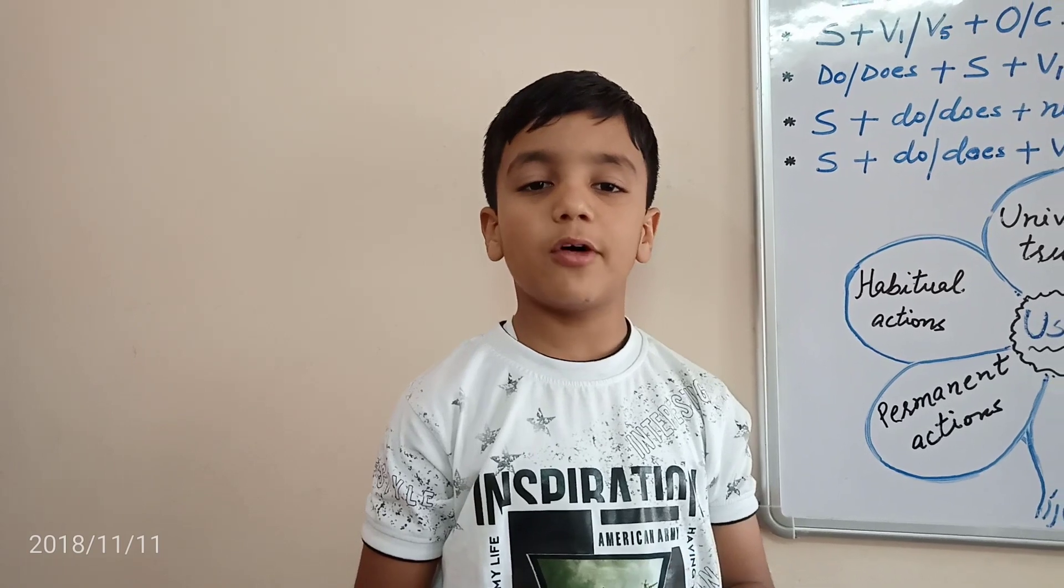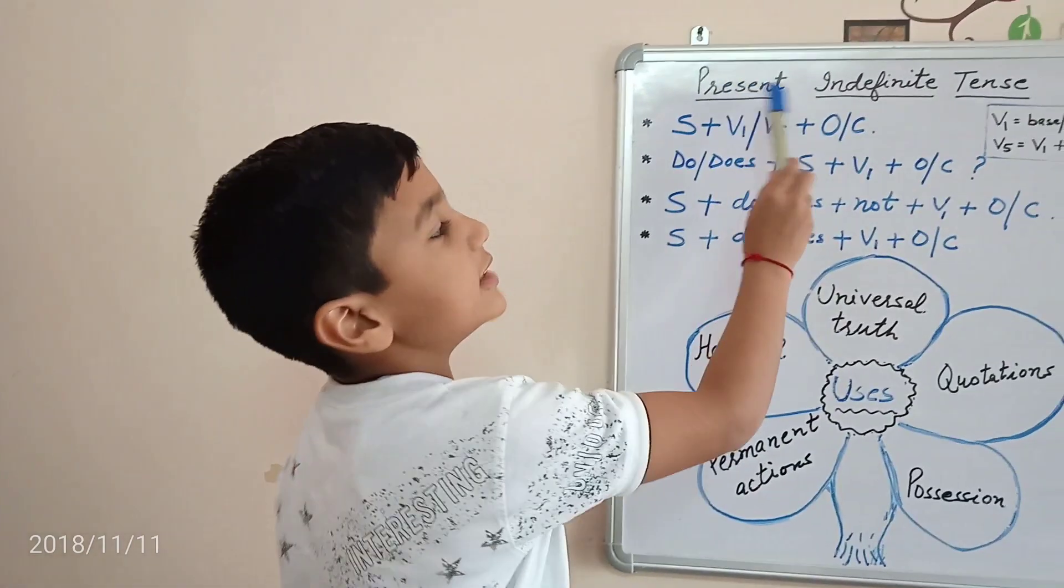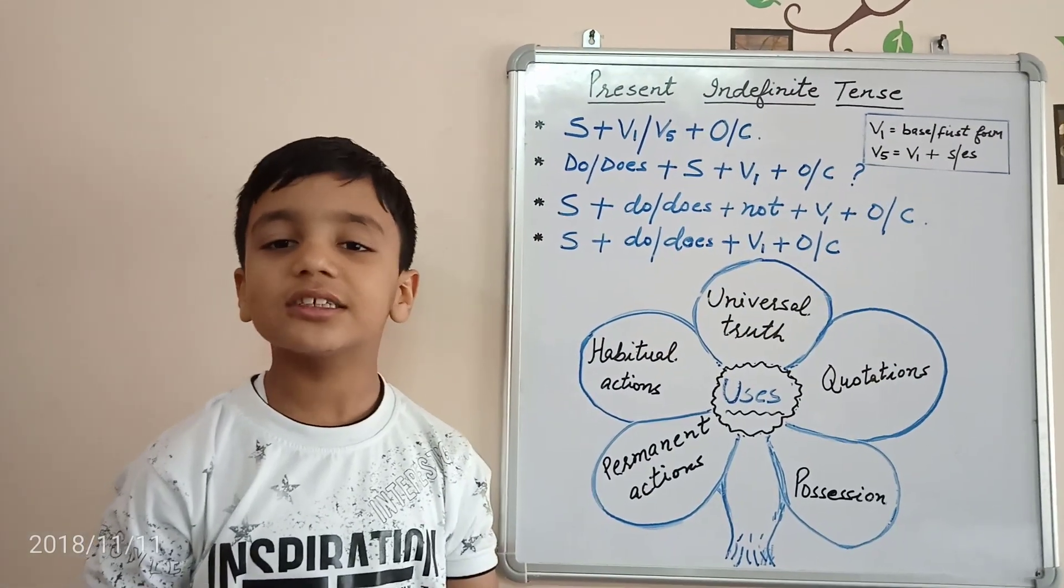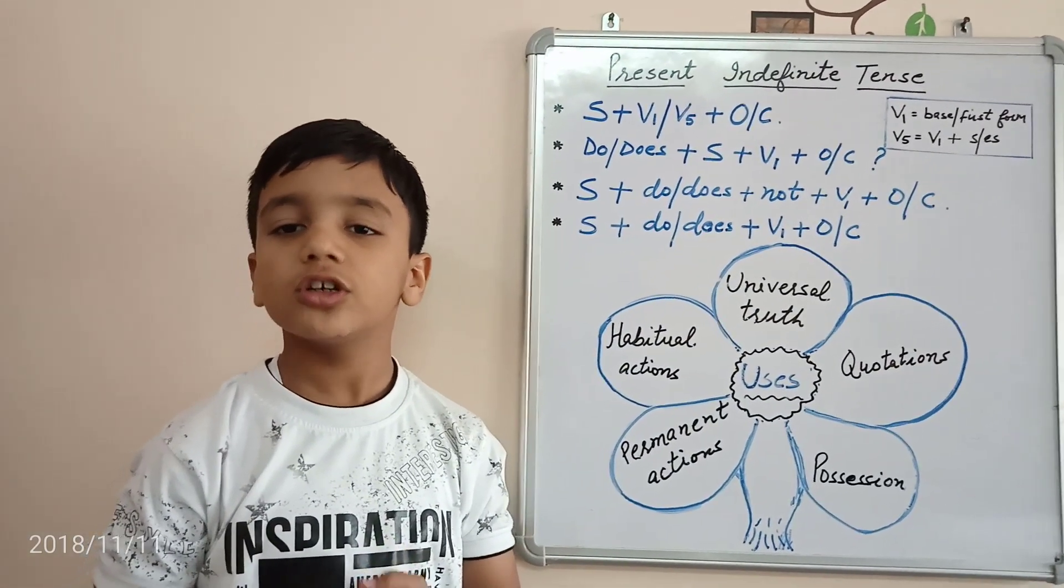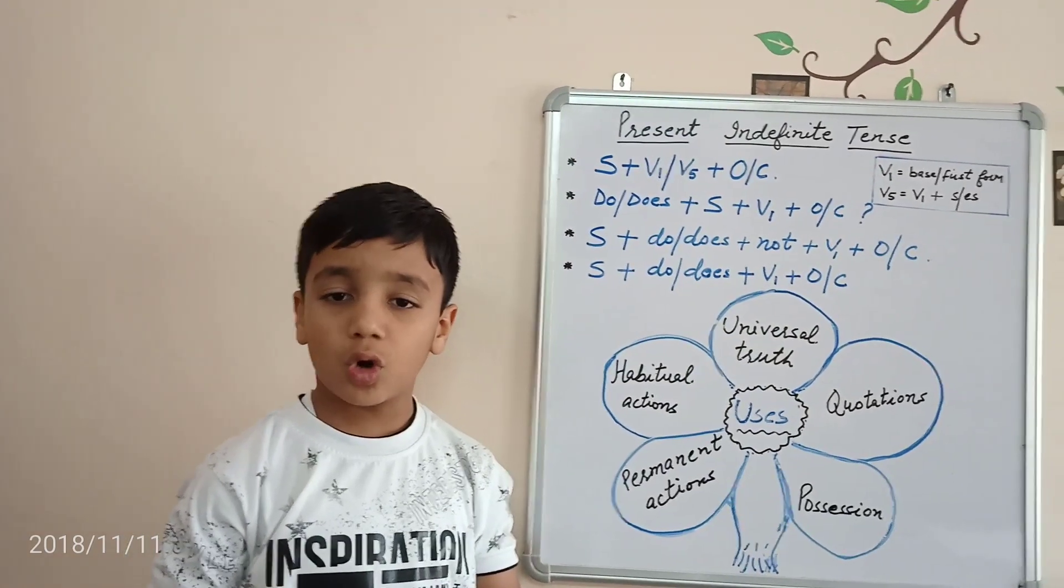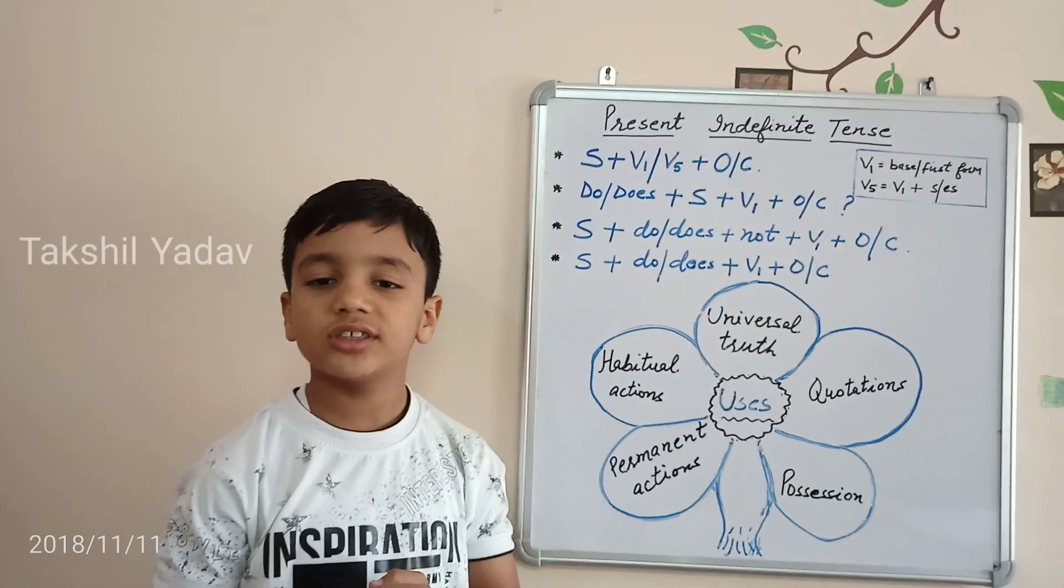today we are going to discuss the first type of Present Tense, that is, Present Indefinite Tense. It is a tense which tells us about Permanent Actions, Routine Actions, Habitual Actions, Professional Ownership, Planned Future Actions, and many more.